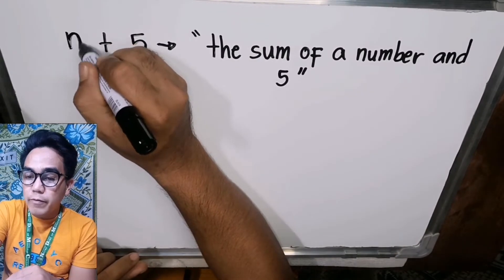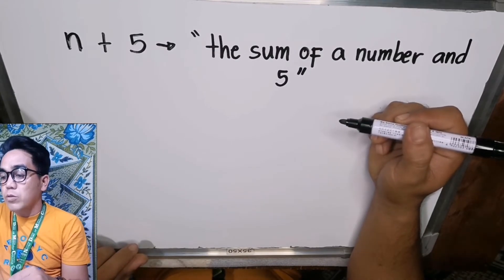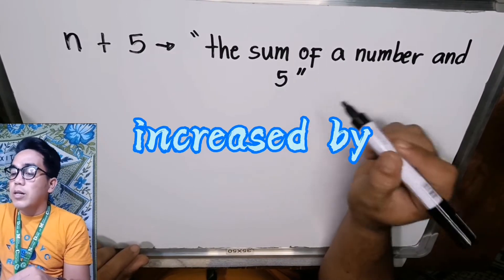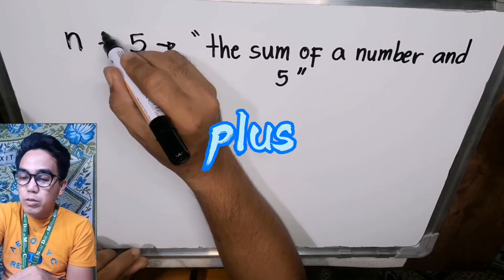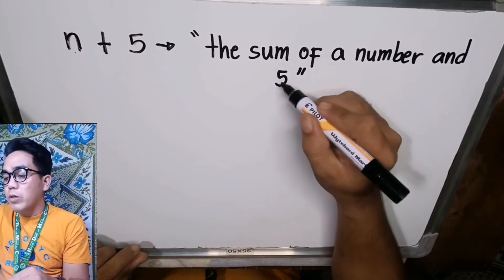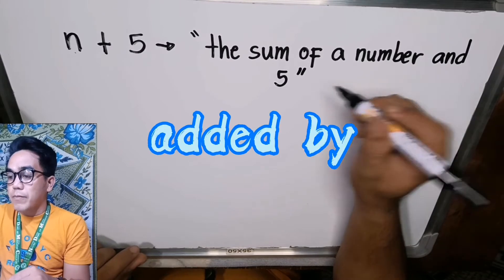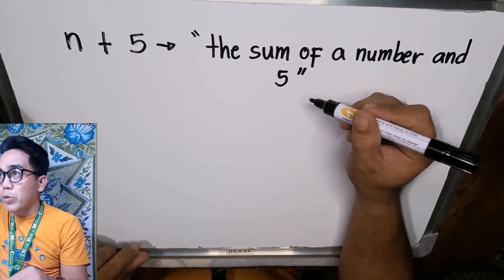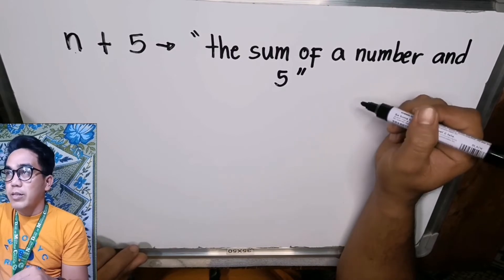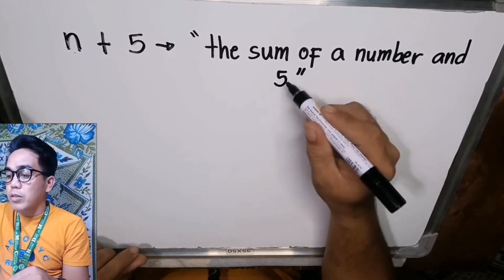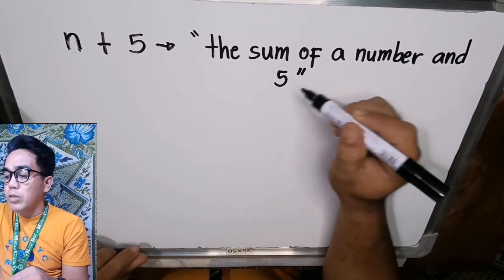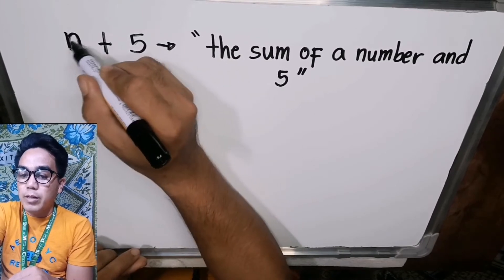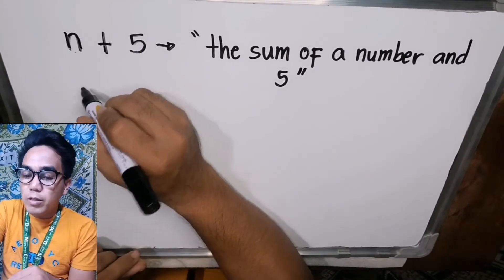Here are different terms for addition. We can also use 'the total of a number and five,' or 'a number increased by five,' or 'a number plus five,' or 'a number added by five.' But if we use the phrase 'more than,' we change the order of the addends — instead of starting with the number, we start with five: 'five more than a number,' which still represents the same sum.